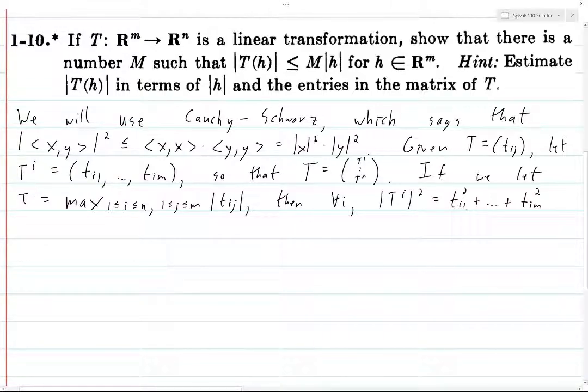So t_i1 squared is going to be less than or equal to tau squared. And t_i2 squared is going to be less than or equal to tau squared, et cetera, and t_im squared is going to be less than or equal to tau squared. So this sum that I've just written is going to be less than or equal to tau squared times, well how many of these terms do we have? We have m of them, so m times tau squared.